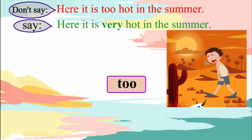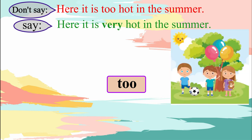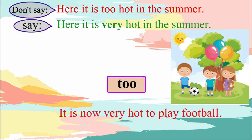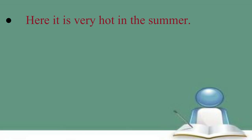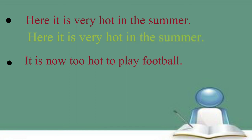Now let us use too in a sentence. If we say: it is now very hot to play football — is this correct? No, this is incorrect. The correct sentence is: it is now too hot to play football. Please repeat the correct sentences after me. Here it is very hot in the summer. It is now too hot to play football.